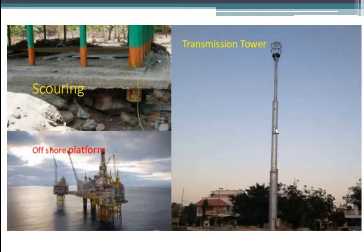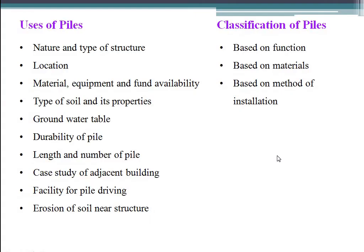Looking at the figures: the first shows scouring, the second shows offshore platforms for digging oil where pile foundations go deep into the soil, and the third shows transmission line towers vertically erected in soft soil requiring pile foundation. Other considerations for use of piles include: nature and type of structure, location, material equipment and fund availability, type of soil and its property, ground water table, durability of pile, length and number of piles, case study of address and building, facility for pile driving, and erosion of soil near the structure. Piles can be classified by three different methods: based on function, based on material, and based on installation.